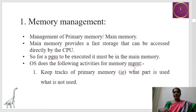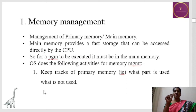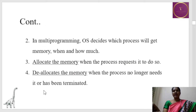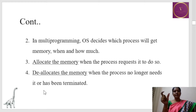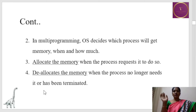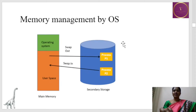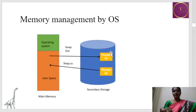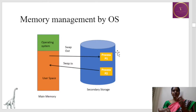OS keeps track of primary memory — what part is used and what is not used, that is, what is free. In multiprogramming, OS decides which program should be in the main memory and which should not, and when and how to allocate the memory. Once the work of the program is completed, it deallocates the memory when the process is no longer used or when the process is terminated. This is the pictorial representation of memory management — operating system manages the main memory used space, deciding when process one goes out and process two comes in.